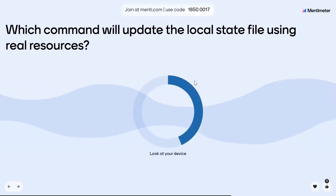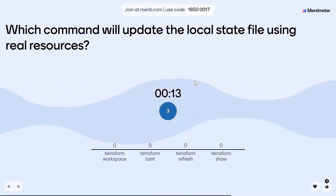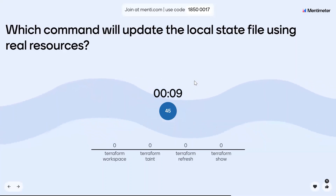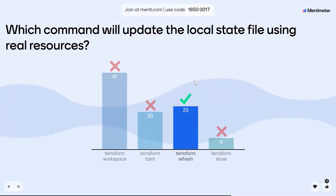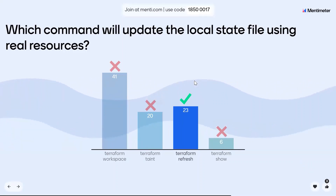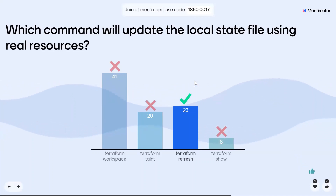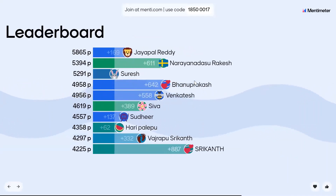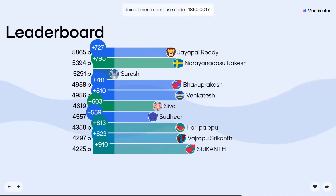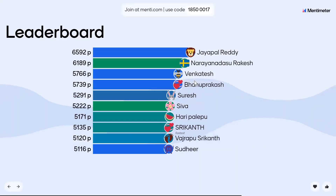Which command will update the local state file using real resources? Terraform workspace and terraform taint are different concepts. For example, if you manually delete an instance, terraform apply will automatically refresh. The terraform refresh command syncs the state file with actual real-world infrastructure. That is nothing but refresh. Jaypal, Rakesh, and Venkatesh.